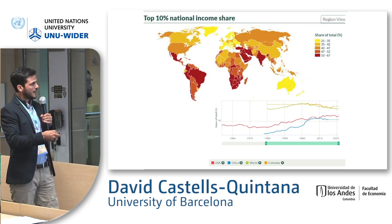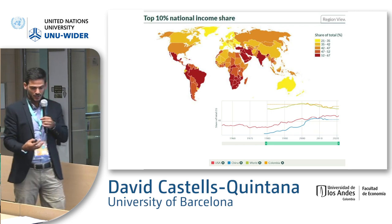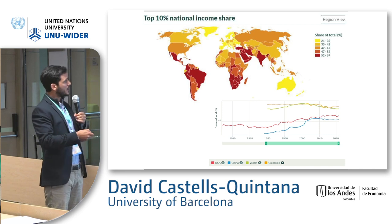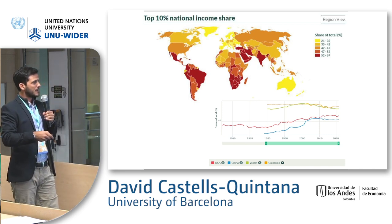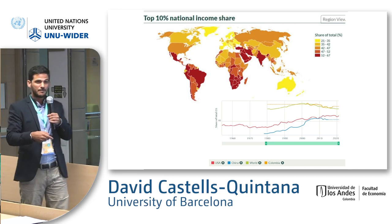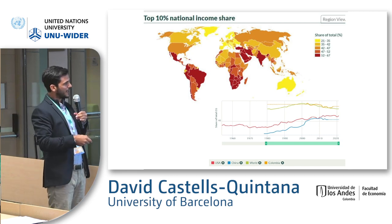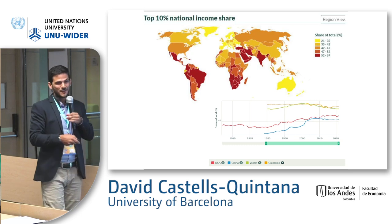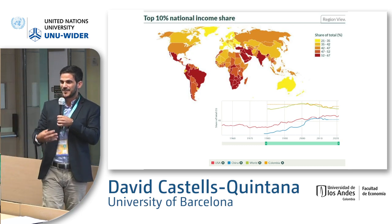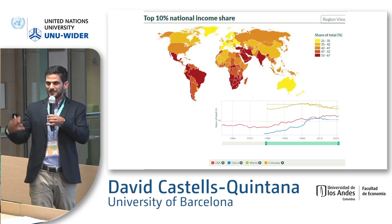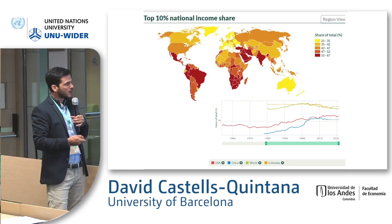This shows cross-country variation in the concentration of income at the top. We can see it by looking at the top 10%, and we see the dispersion — the peak variability across countries. I want to highlight Latin America, where we know inequality is really high. There has been a lot of discussion at this congress about inequality in Colombia.